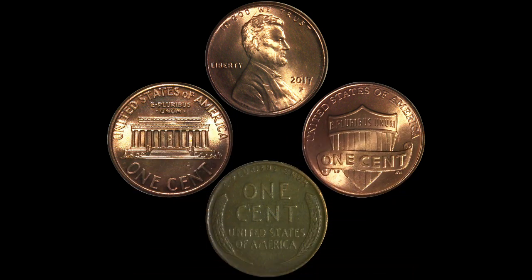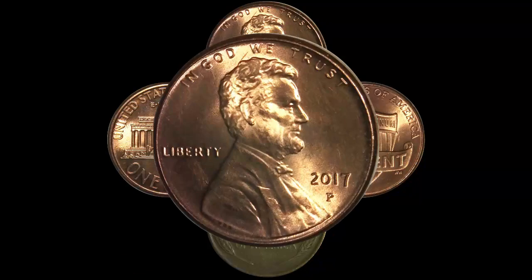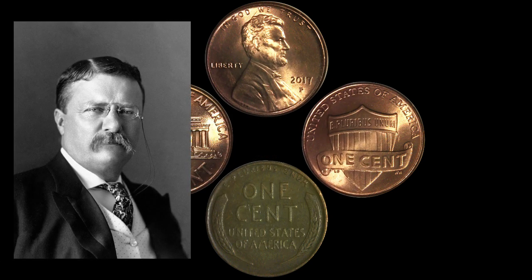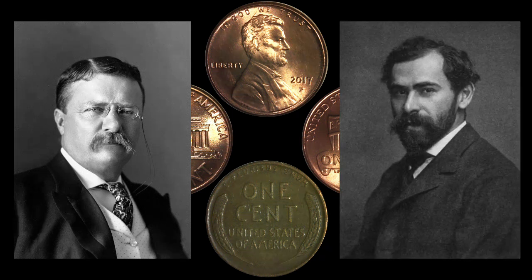The front of the Lincoln cent is the longest used design in US currency history. It debuted in 1909, the 100th anniversary of Lincoln's birth, and it's the first US coin to bear the likeness of a historical figure. Theodore Roosevelt was president at the time and likely personally selected artist Victor David Brenner to create the design, as no other artists were considered for the project.